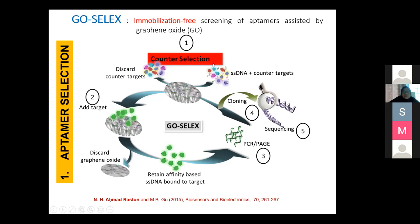The counter selection step is new — I didn't explain it in the previous SELEX slides. Counter selection is a very important step at the beginning of the selection cycles. For vaspin as my target, I also incubate the DNA library with other proteins closely related to vaspin that are involved in diabetes as biomarkers, such as adiponectin and human serum, to eliminate all non-specific binding of single-stranded DNA. This ensures we produce high-affinity aptamers specific to our target.